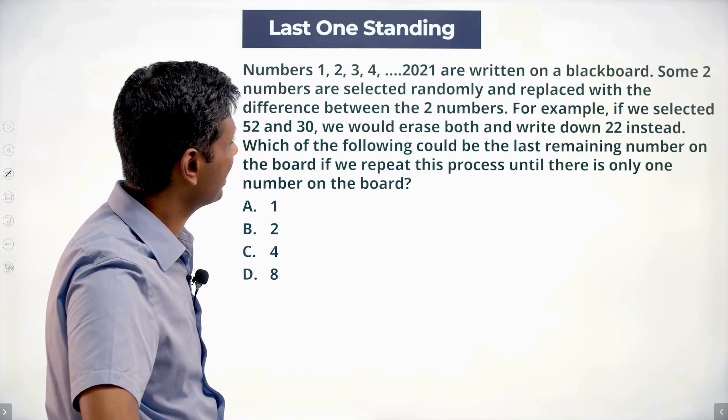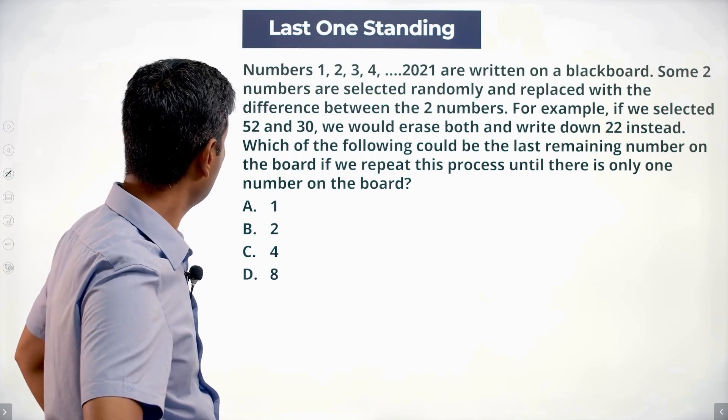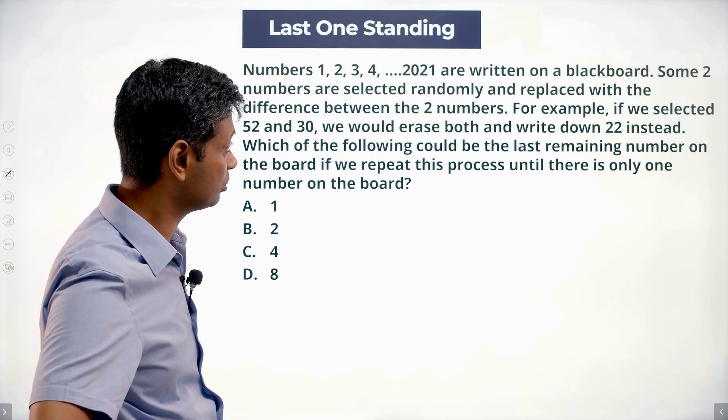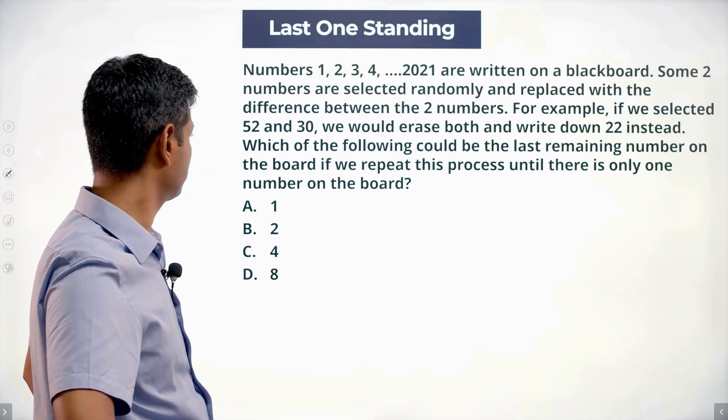Numbers 1, 2, 3, 4 till 2021 are written on a blackboard. Some two numbers are selected randomly and replaced with the difference between the two numbers. If we selected 52 and 30, we would erase both and write down 22 instead.